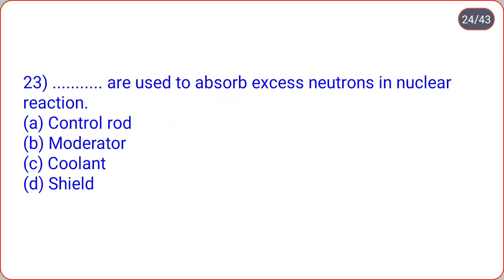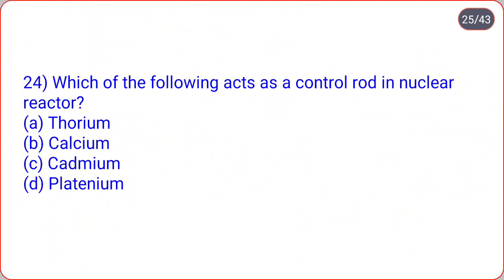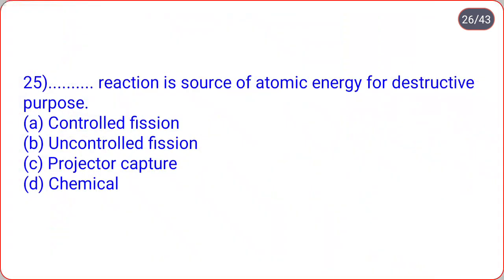Dot-dot are used to absorb excess neutrons in nuclear reaction. Which of the following acts as a control rod in a nuclear reactor? Correct option is option A, control rods are used to absorb excess neutrons in nuclear reaction.